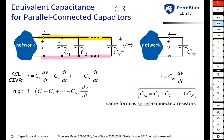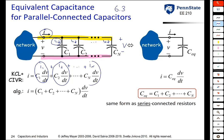The current through the first capacitor, let's call it I1. The current through the second capacitor, I2, all the way up to the last capacitor, whose current is I sub N. The total current going into those parallel combinations, I, is then equal to I1 plus I2 plus I sub N. The current through any capacitor is its capacitance times the derivative of its voltage, so I1 is C1 times dV/dt, I2 is C2 times dV/dt, all the way up to I_N equals C_N times dV/dt. The total current I can be written as (C1 + C2 + ... + C_N) times dV/dt.